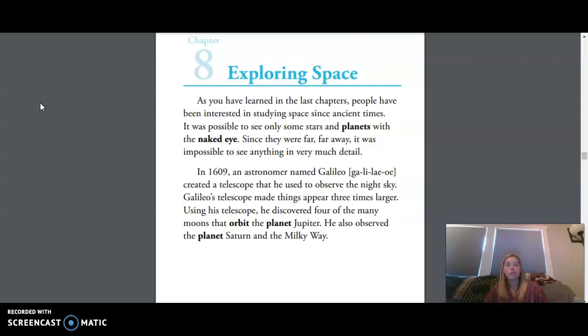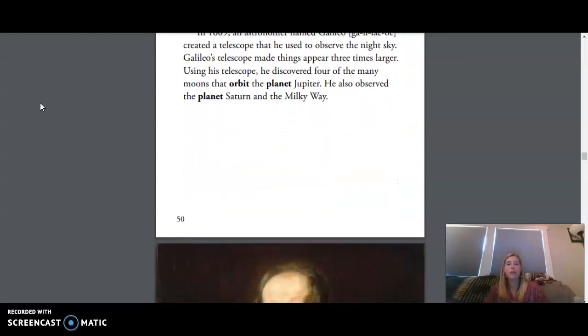In 1609, an astronomer named Galileo created a telescope that he used to observe the night sky. Galileo's telescope made things appear three times larger. Using his telescope, he discovered four of the many moons that orbit the planet Jupiter. He also observed the planet Saturn and the Milky Way.